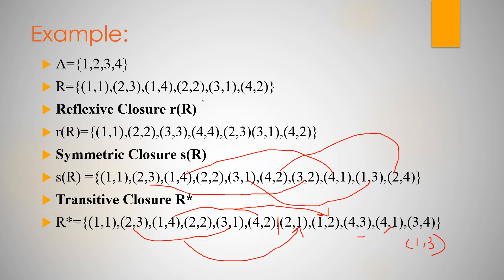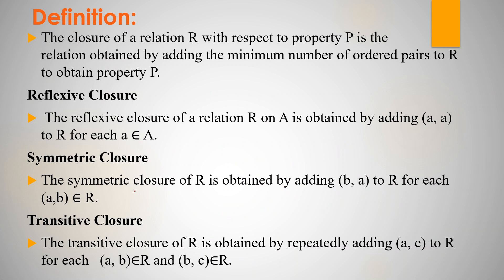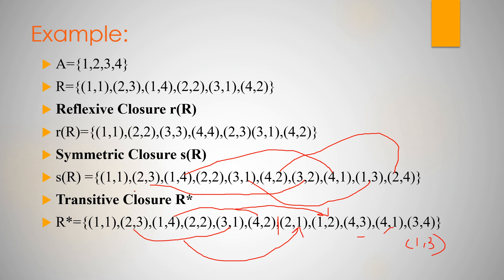To summarize, reflexive closure is easy, symmetric closure is easy, but transitive closure requires more work because we repeatedly have to add AC for each AB in R and BC in R. There are mainly three types of closures: reflexive, represented by r(R); symmetric, represented by s(R); and transitive, represented by R star or t(R). Hope the concept is clear. Thank you so much.